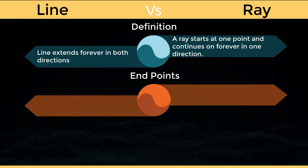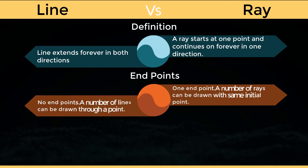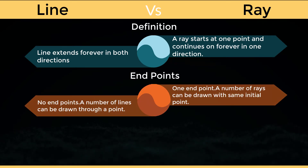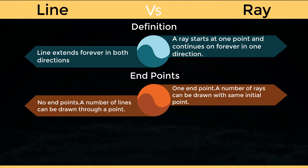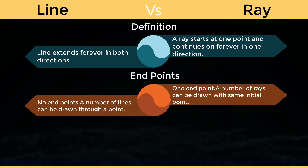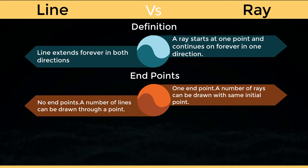Endpoints of a line: no endpoints. A number of lines can be drawn through a point. Endpoints of a ray: one endpoint. A number of rays can be drawn with the same initial point.